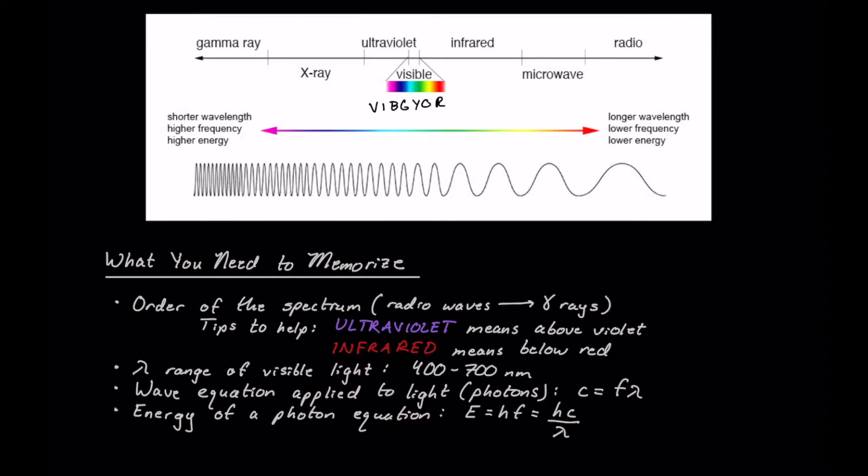That way you can always remember that violet will be of the higher frequency, lower wavelength, and the red will be of the higher wavelength and lower frequency.